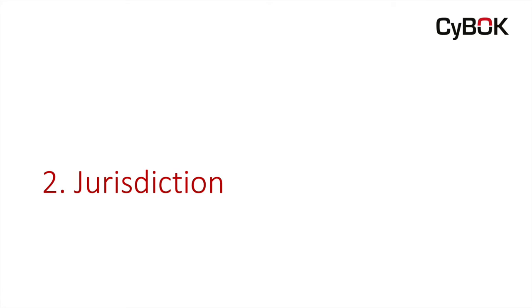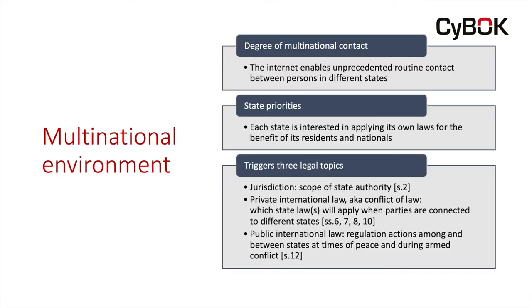Let's have a look at jurisdiction. In dealing with cybersecurity, we inevitably get thrown into a multinational environment, because the internet enables unprecedented contact between people who are in different states. Having said that, states have an interest in applying their own laws for the benefit of their own residents and nationals. These two points lead to three legal topics that become incredibly important. The first is jurisdiction — scope of state authority — and that's the subject of this section of the knowledge area.